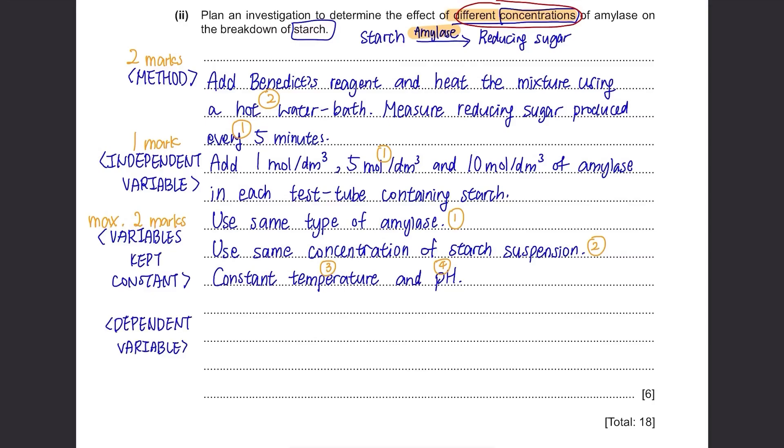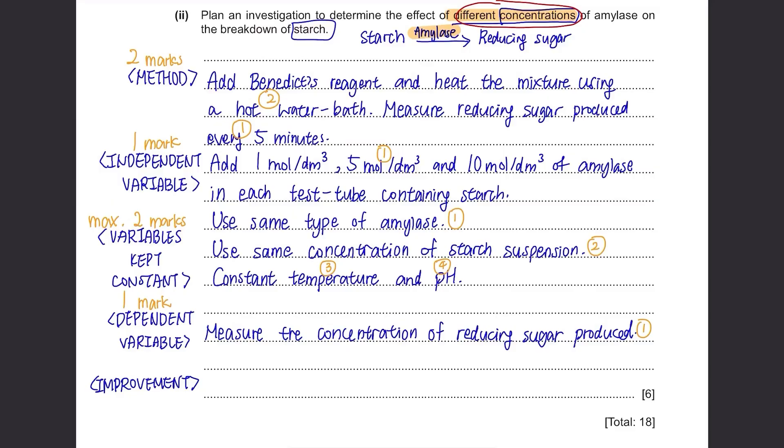Also the temperature and pH should be constant throughout the experiment since enzymes like amylase are temperature and pH sensitive. Moving on, dependent variable. It's the one that we are going to measure and record: the concentration of reducing sugar produced. This can be measured by observing the intensity of colour. Lastly, include some ways to improve the experiment. Repeat the investigation 2 more times to make sure you haven't made an error in the first one. You can add a safety precaution as well. When using a hot water bath, wear goggles.